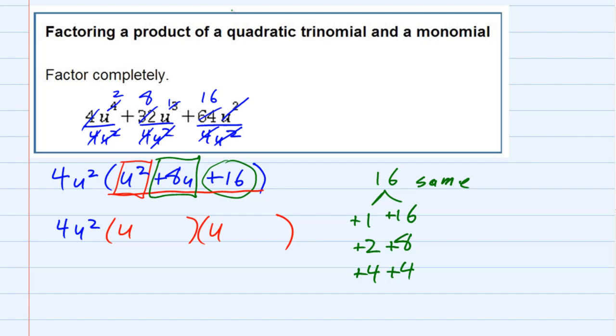And the one that is going to add up to the 8 is going to be that bottom possibility, which is a plus 4 and plus 4.